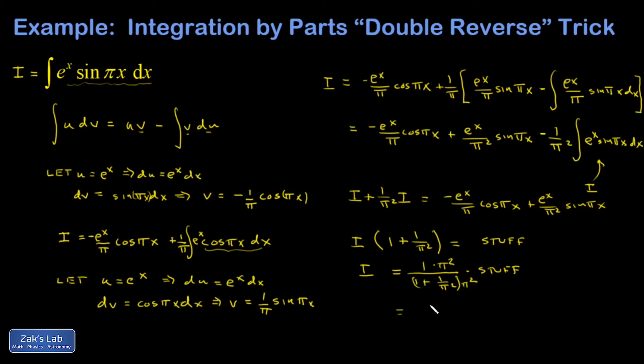And I'm going to multiply the top and bottom of this thing by π² to clean it up. And then I'll be able to express my final answer. So I have π² over (π² + 1) times negative e^x over π cosine πx plus e^x over π² sine πx.